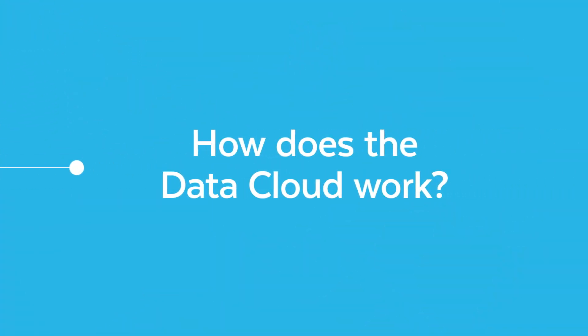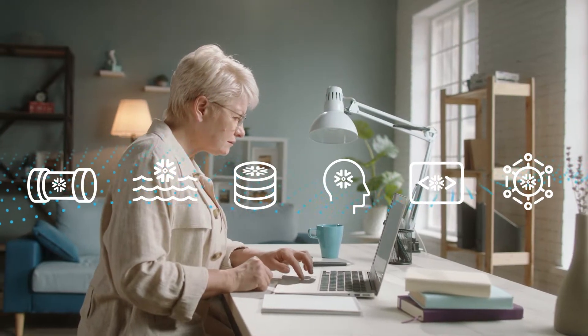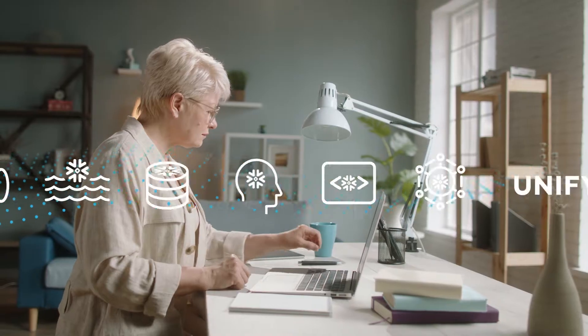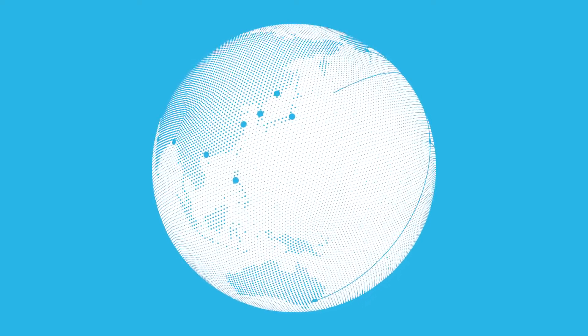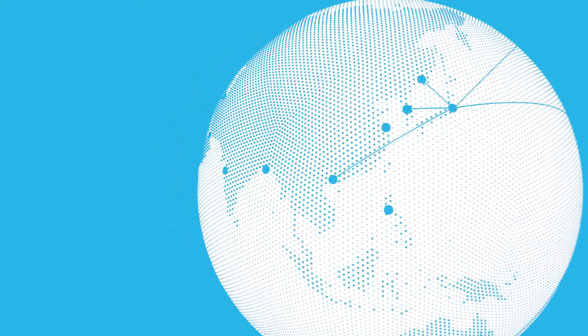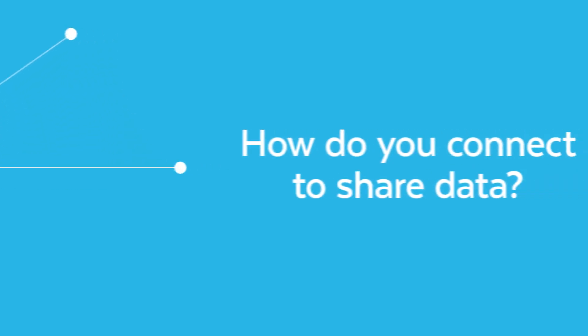So how does the Data Cloud work? The engine that drives the Data Cloud is Snowflake's platform. Snowflake customers use our platform to unify, integrate, analyze, and share data. They do this for many of their critical data workloads, and at nearly any scale or speed they desire. Once you mobilize your data on Snowflake, that data becomes part of the Data Cloud. You retain complete control, but can seamlessly and securely share governed slices of your data with anyone in the Data Cloud.